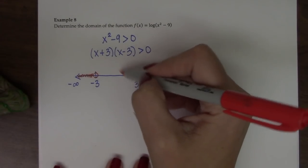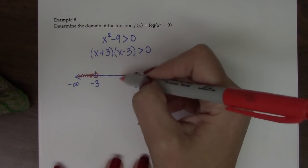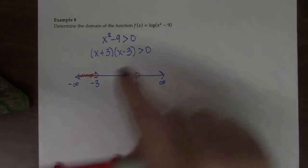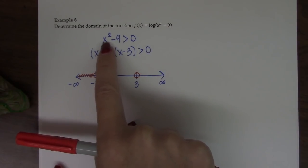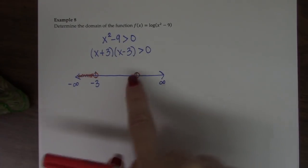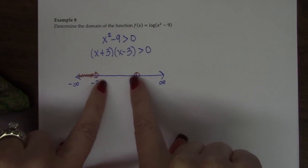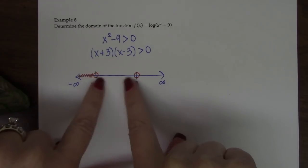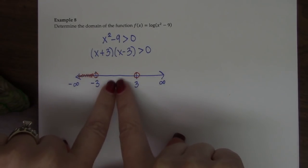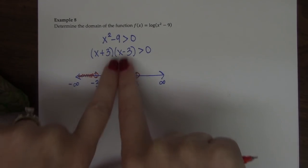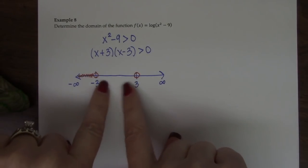If I pick values in between negative 3 and 3, so 0 is a good choice, and I plug it in here, well, 0 minus 9 is negative 9. So that also makes sense, because values in here are smaller than 3, and if you square them, they're definitely smaller than 9. So they're going to all come out negative.